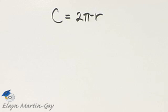For this problem, we're given a circle with radius 9 inches. We'd like to find the circumference of the circle and also the area of the circle.